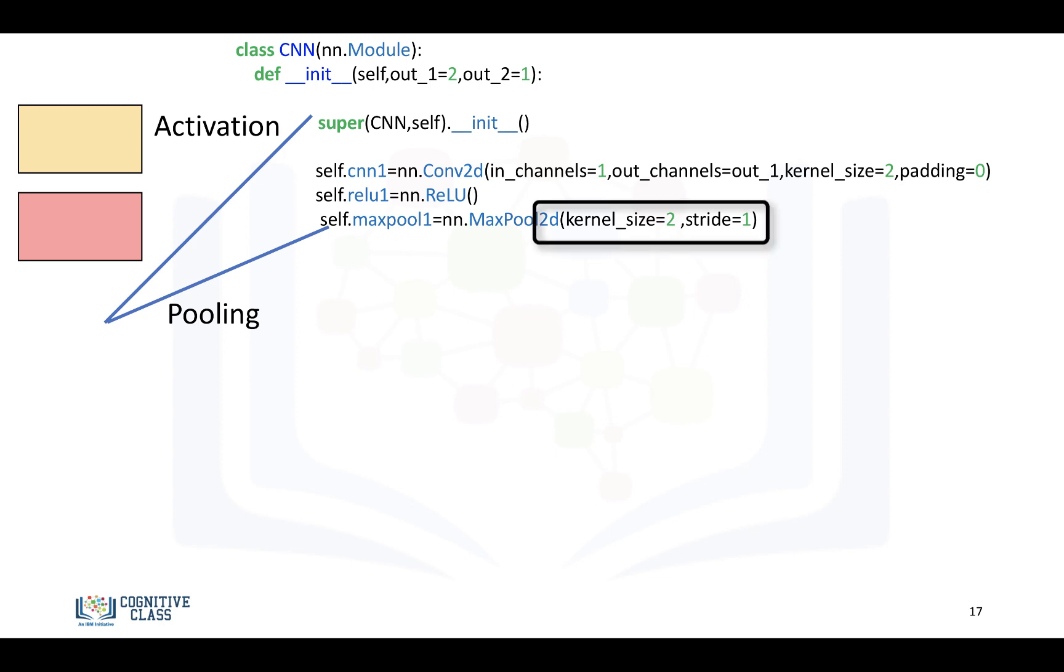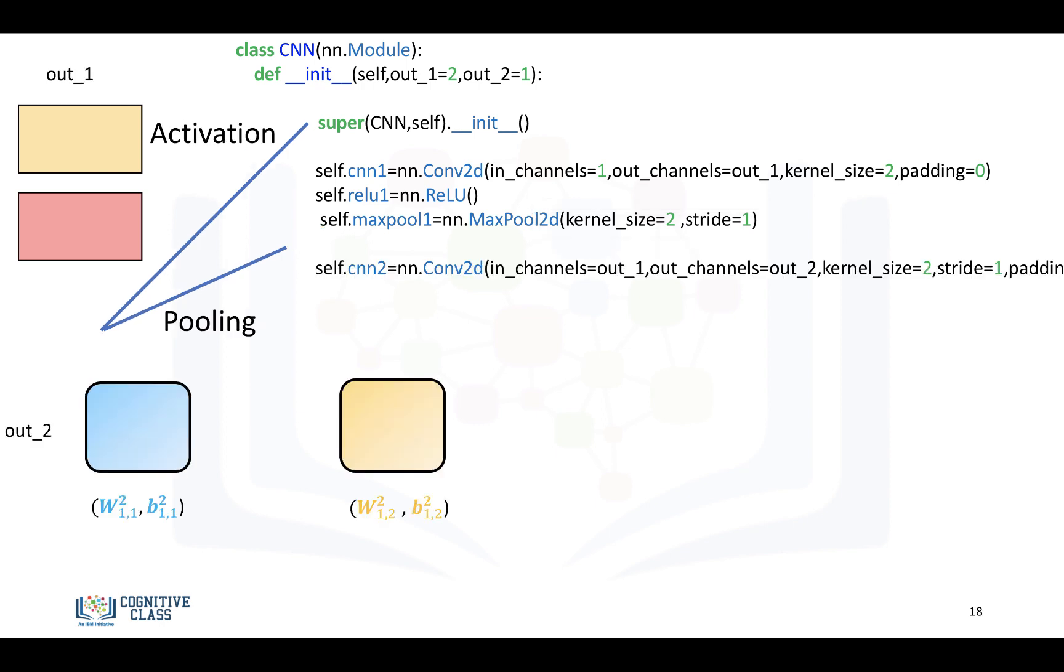And again, for max pooling and stride size, we'll have to take those into account when we calculate the size of our flattening layer. Now, we'll construct our second convolutional layer, and you'll notice how the number of outputs for our first layer is equal to the number of inputs for our second layer.